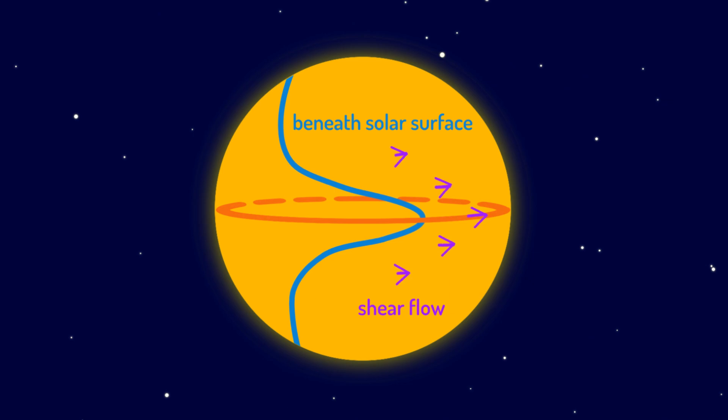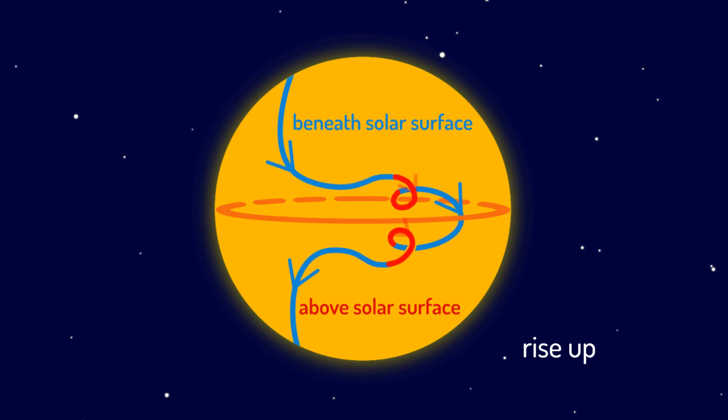The stretched magnetic field along the flow direction enhances its strength, which makes it lighter compared to the surrounding plasma, causing it to rise up to the surface like a deep sea bubble rising up to sea level.